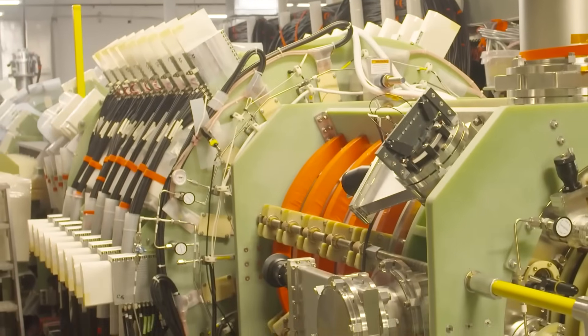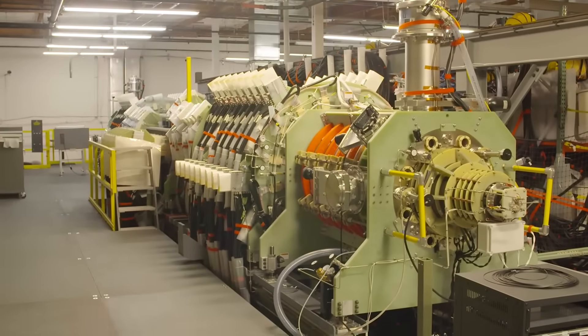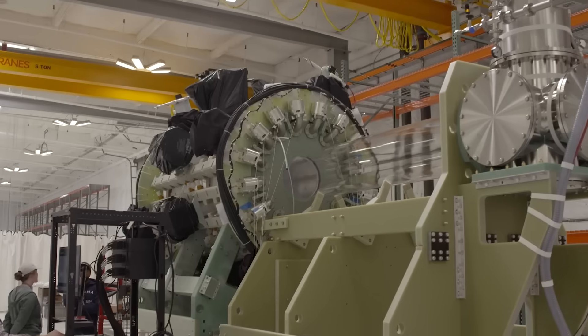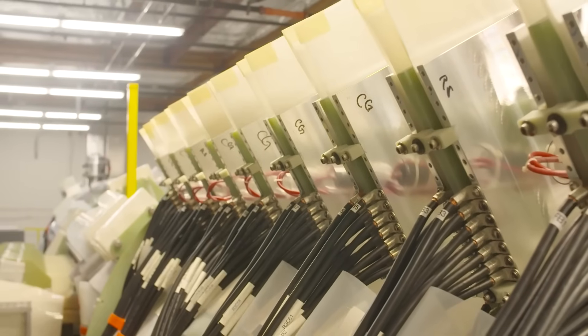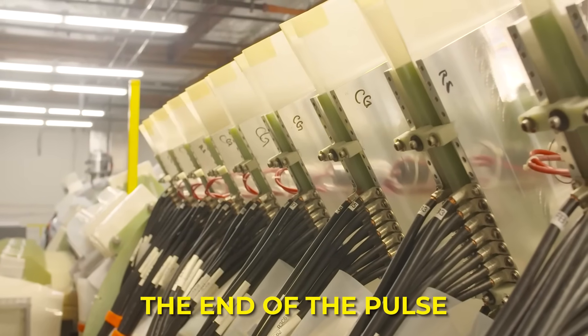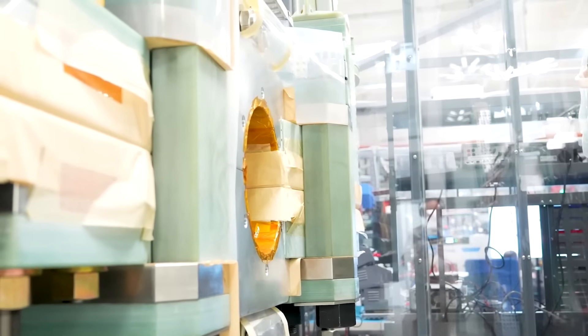That leads to a key design choice. One big capacitor bank does double duty. It stores the energy to form and accelerate the FRCs. It is also the place where the recovered energy lands at the end of the pulse. In other words, the starter and the alternator are the same hardware.